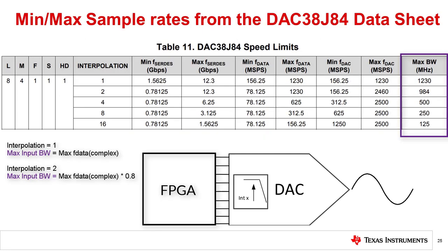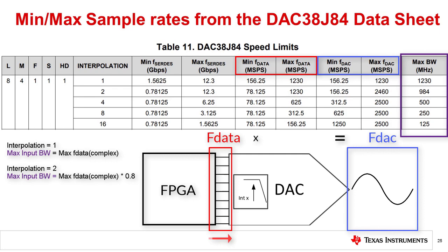In this slide, you will see a table showing the minimum and maximum sample rates that can be used by this DAC. FDATA is the rate at which parallel data is leaving the JESD204B block and feeding the digital input block of the DAC. FDAC is the actual sample rate of the DAC, and FDAC is equal to FDATA times the interpolation factor. Since the SERDES outputs use an internal PLL, they will have a minimum as well as a maximum operating range. Due to this, JESD204B data converters have a relatively high minimum sample rate. In many cases, to use the maximum sample rate, the user must use some interpolation to get the SERDES rate down below the 12.5 gigabits per second maximum allowed by the JESD204B standard.